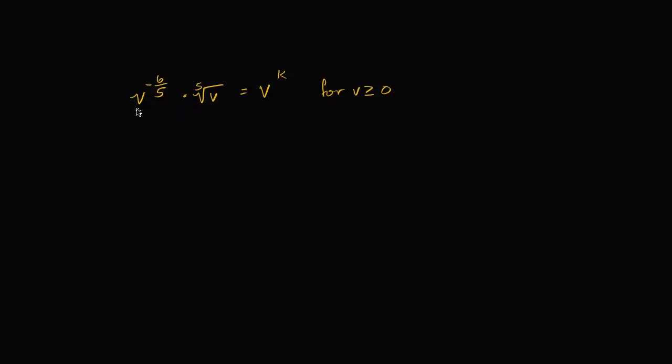So I have an interesting equation here. It says v to the negative 6 fifths power times the fifth root of v is equal to v to the k power for v being greater than or equal to zero.